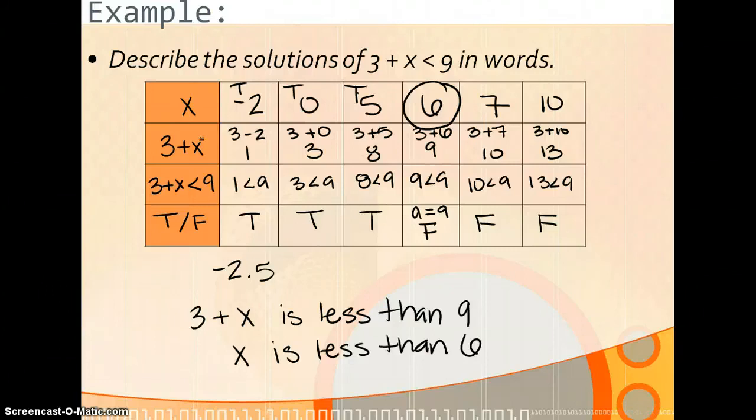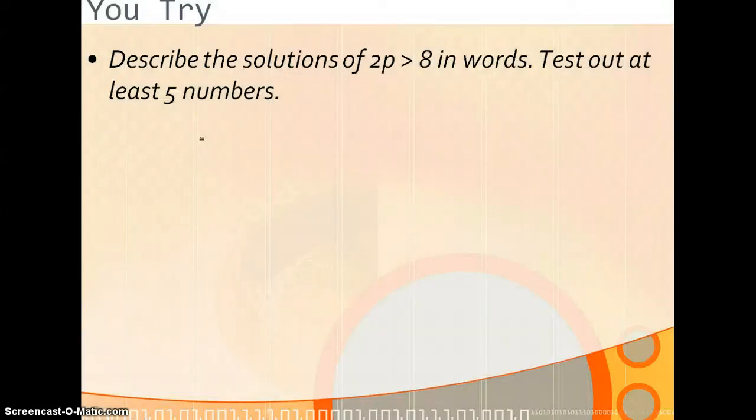This video is a little bit longer than normal. It's just because I'm trying to make you understand inequalities. On the U-Try, make sure that you make your little chart, work it all out, and then discuss how you would write out in words the 2p is greater than 8, and then also how you would kind of write the solution based off the numbers that you tested. That's the end of this video, and there are three more after this one. Thank you.